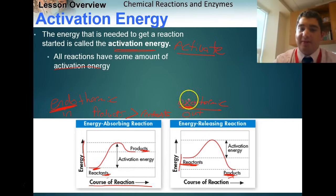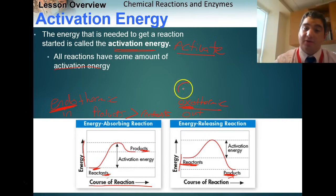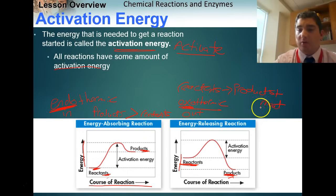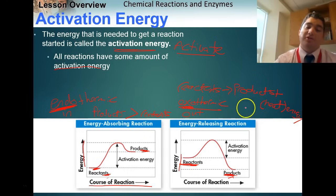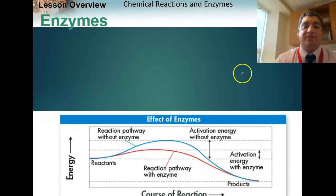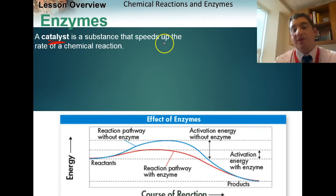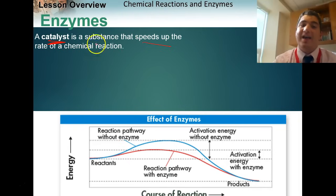In exothermic reactions, energy goes out. We start with our reactants, do the chemical reaction, and get products plus heat or energy released. Now we get to enzymes — enzymes are catalysts, and catalysts are substances that speed up the rate of a reaction.